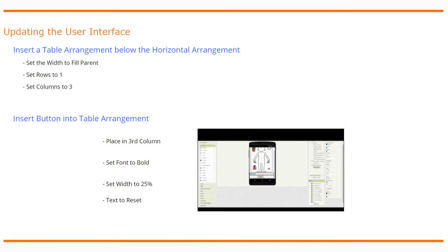To update the user interface, we need to insert a table arrangement below the horizontal arrangement added for our score label. In this table arrangement we'll set the width to fill parent, the rows to one, and the columns to three. We'll then insert a button into the third column, set the font to bold, the width to 25, and change the text to Reset.